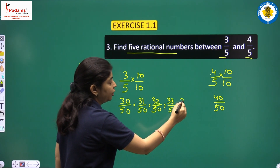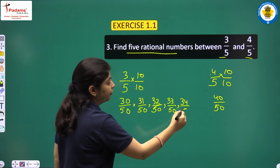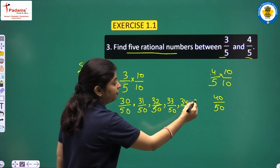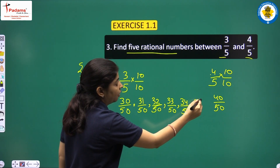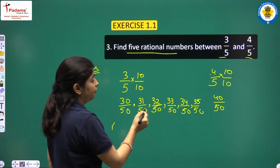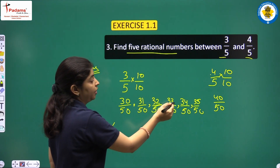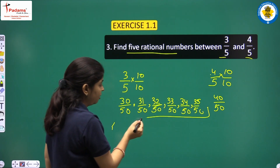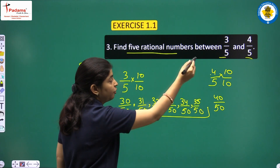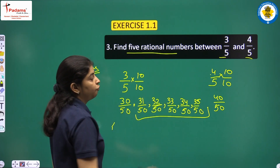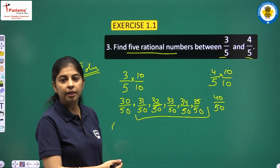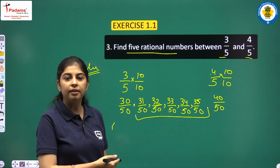The answer gives us numbers between 3/5 and 4/5. Converting, we get 30/50 and 40/50. From here we can take: 31/50, 32/50, 33/50, 34/50, and 35/50. These are 5 rational numbers between 3/5 and 4/5. You can simplify the fractions as needed.